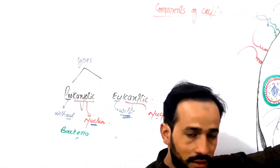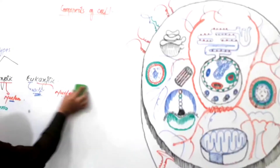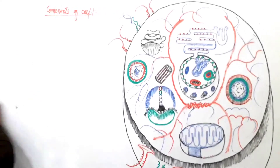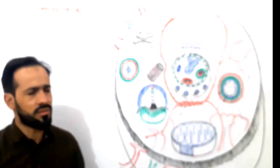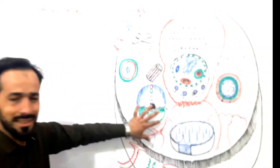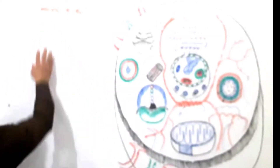Let me now mention all the parts that will be discussed in the lectures on the structure of the human cell. We have more than 200 types of cells in our body. We will discuss one cell in great detail, and keep in mind that each cell in our body has this basic structure. Let's go through all the components.